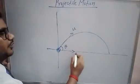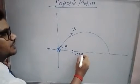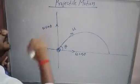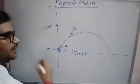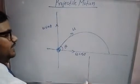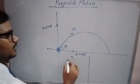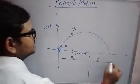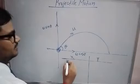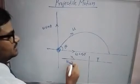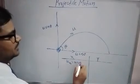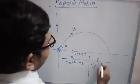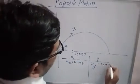The horizontal component is u cos theta and the vertical component is u sin theta. So if you split it into two parts — motion along the x-axis and motion along the y-axis — then we can write: initial velocity along the x-axis is u cos theta, and initial velocity along the y-axis is u sin theta.